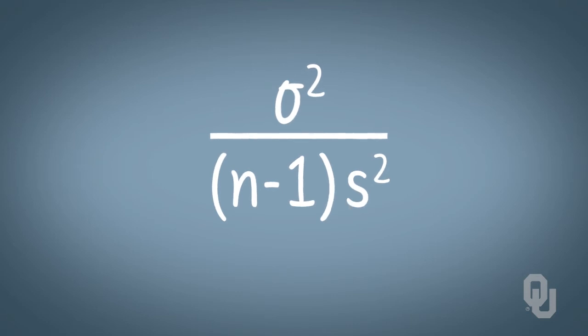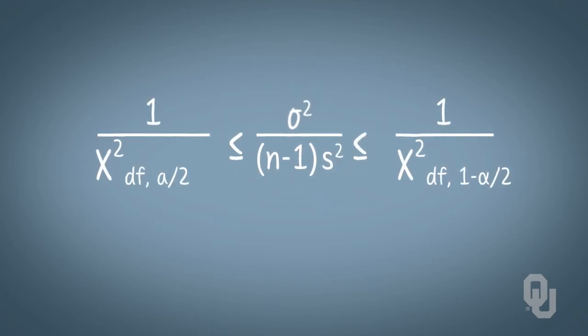So now, sigma-squared divided by n-minus-one times s-squared is bounded between the two ratios that you see on the screen. Note the inverse of the bigger number becomes the smaller number and vice-versa, thus the logic behind switching the inverses of the bounds.